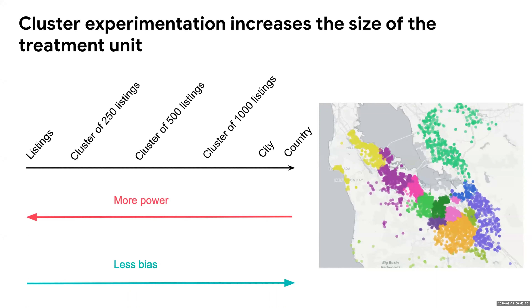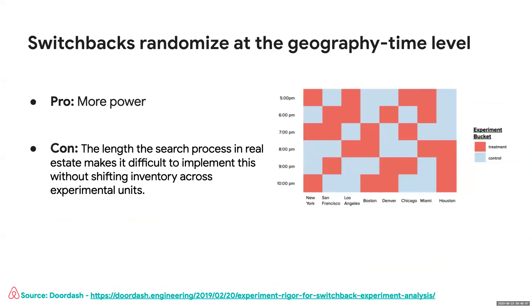One way ride-sharing companies have tried to get around this is to add a time dimension — switchbacks. In addition to assigning treatment and control at the geography level, they add a time dimension. For example, New York is in treatment from 4:30 to 5:30 for drivers, then from 5:30 to 6:30 is in control, and so on. The pro is that gives you a lot more power. The con for Airbnb or any real estate company is that our search process is too long: if I start searching for a listing today, I might not book today — it often takes days, sometimes even weeks. So it's very unclear how to define those search windows, which is very different from Uber or Lyft.